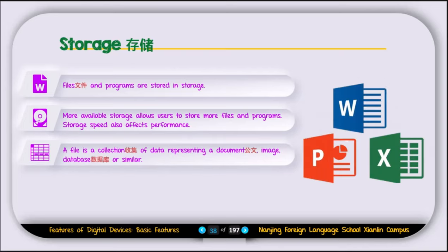Now let's talk about some terminology. A file is a collection of data representing a document, image, database, or similar things. A file always ends with an extension, for example filename.pdf, filename.png, or filename.docx. Files contain data — for example, an image could be a PNG, JPEG, or GIF. A PDF file contains text. Those things that have data are called files.